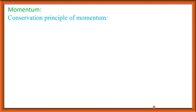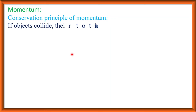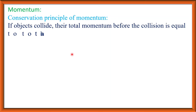Now, conservation principle of momentum. Conservation in physics means the condition before and after an event — that means the amount will remain the same before and after an action. If objects collide, their total momentum before the collision is equal to the total momentum after the collision.